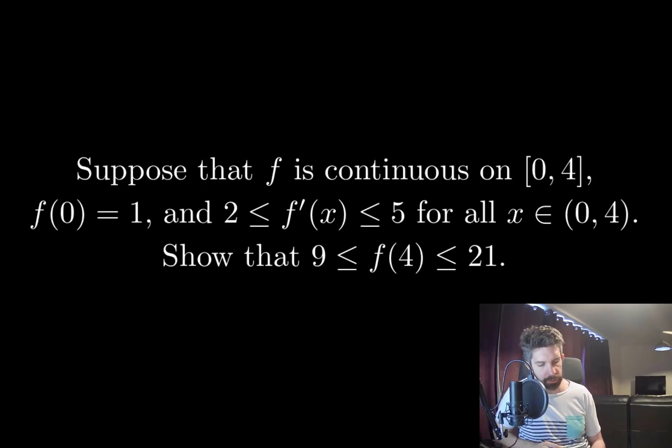Suppose that f is continuous on the closed interval from 0 to 4, f(0) = 1, and f'(x) is between 2 and 5 for all x in the open interval 0 to 4. Show that 9 ≤ f(4) ≤ 21.